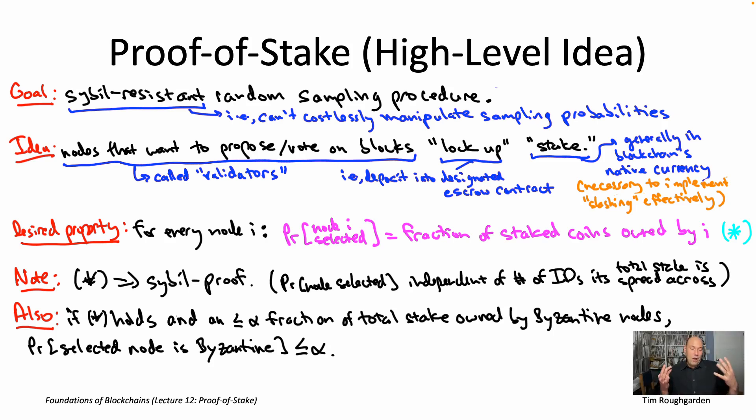Now at this point, all of you should be kind of saying, look, Tim, pretty easy to just write down a desired property on a slide the way I've done here. The real question is, can you actually implement this? And if so, how? How is a protocol going to somehow select leaders so that this property star really is true? So we'll have a lot to say about that. Basically all of part two of lecture 12 is going to be about exactly that. How do you implement random sampling procedures with this property?